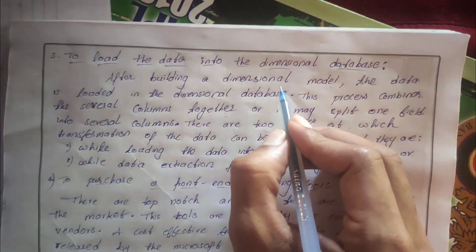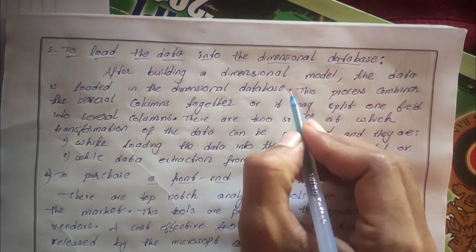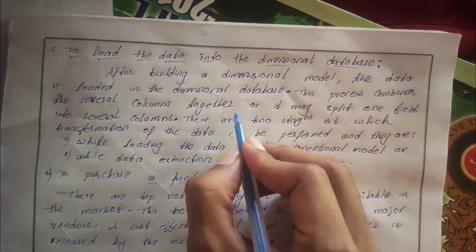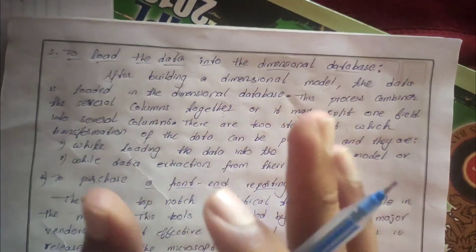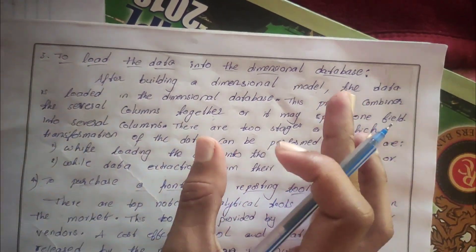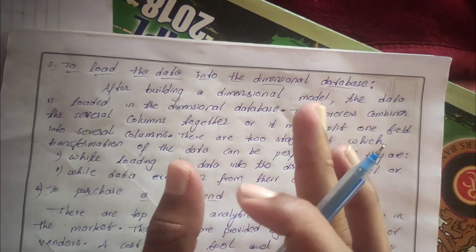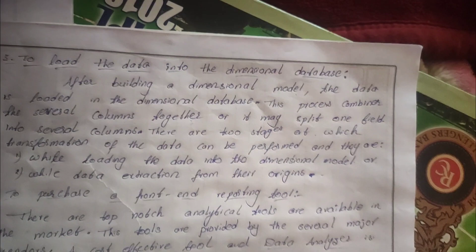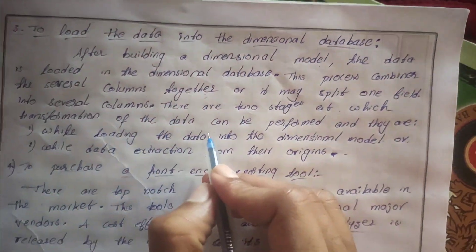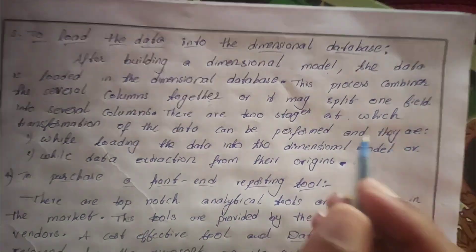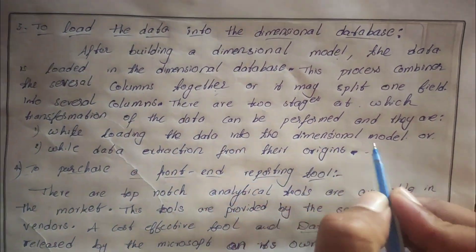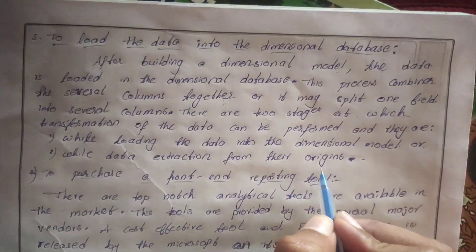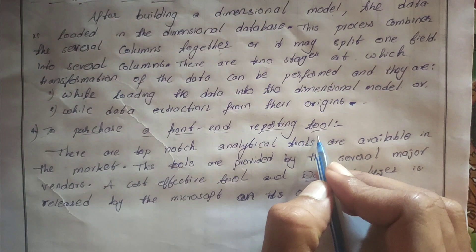Third, to load the data into the dimensional database. After building a dimensional model, the data is loaded into the dimensional database. This process may combine several columns together or split one field into several columns. There are two stages at which transformation can be performed: while loading the data into the dimensional model, or while data is extracted from their origins.